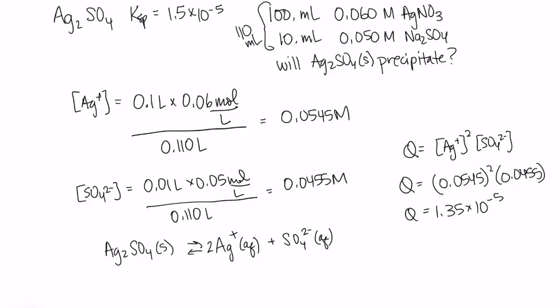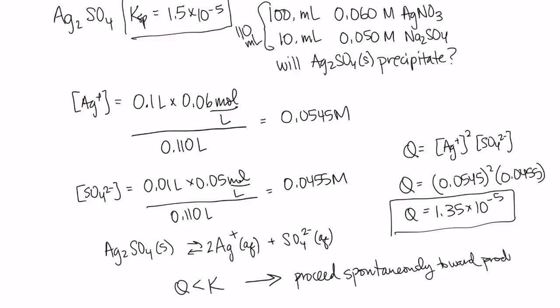So I can compare this Q value to my K value. And I see Q is less than K. When Q is less than K, it means it will proceed spontaneously towards products. And that means that no precipitate will form.